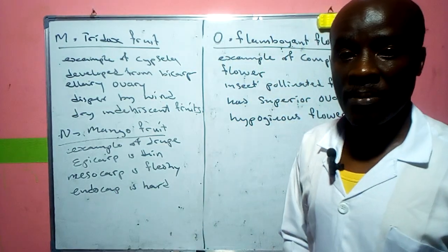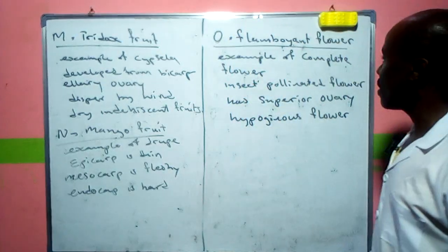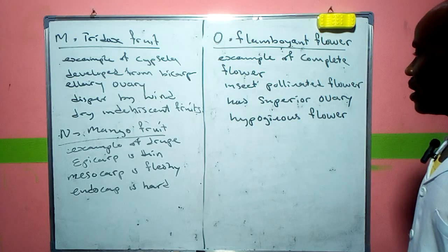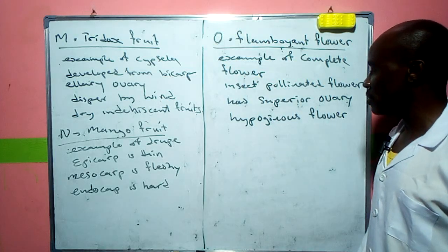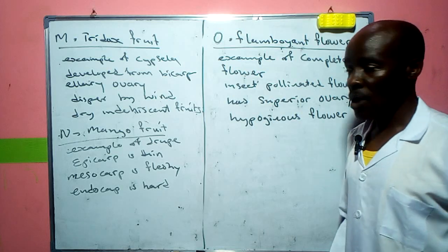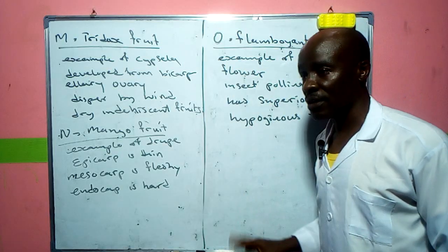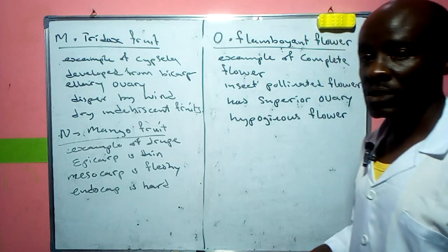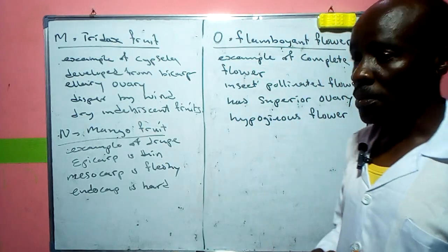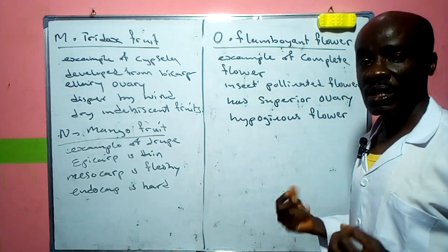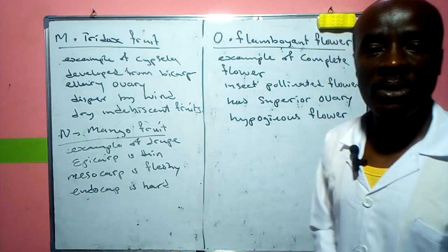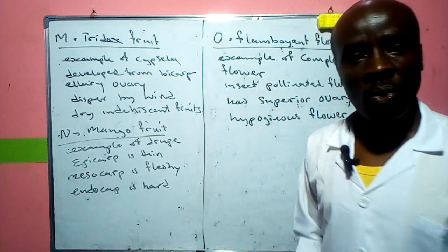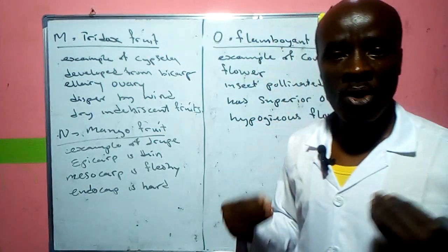Both mango and palm fruit have three layers — epicarp, mesocarp, and endocarp — with the epicarp always thin and the endocarp always hard. The flamboyant flower is an example of a complete insect-pollinated flower with a superior ovary, making it hypogynous. Insect-pollinated flowers are brightly colored, produce nectar, and have sticky pollen grains, which attract their pollinators.